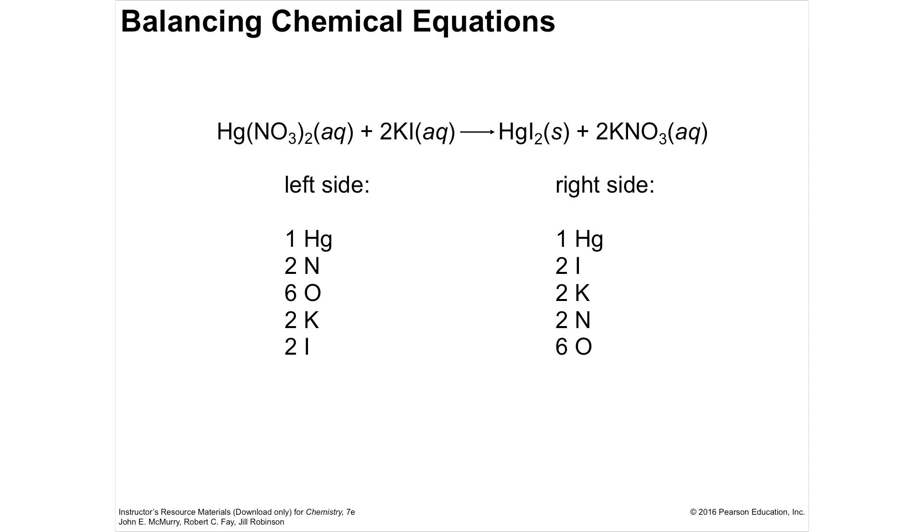My mercuries are already balanced on this side, have an I on this side, have I2. So I have two iodines. I'm going to have to have two iodides on this side. So I multiply this by two and then I check that's now two potassiums. And I do have two potassiums.